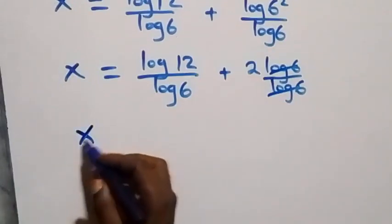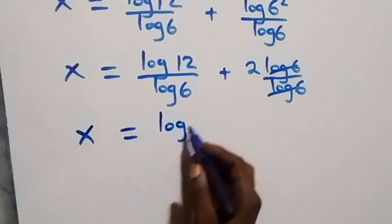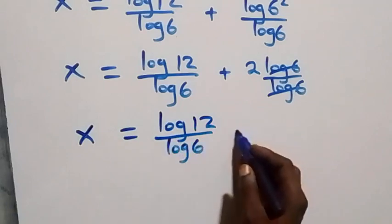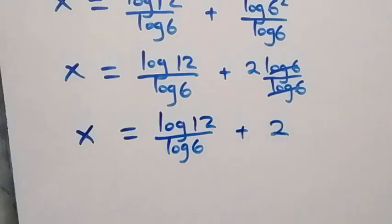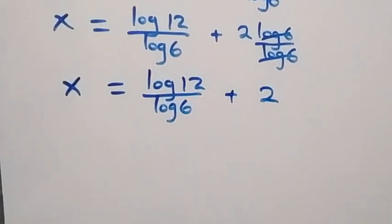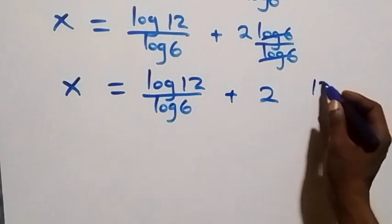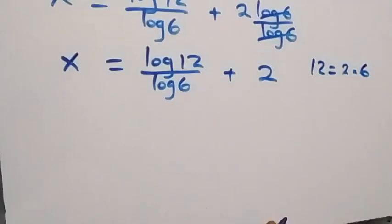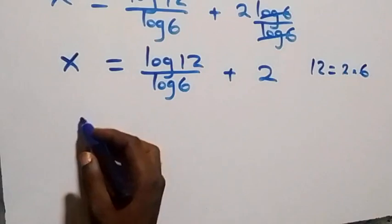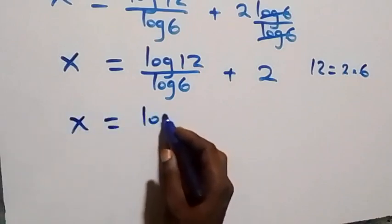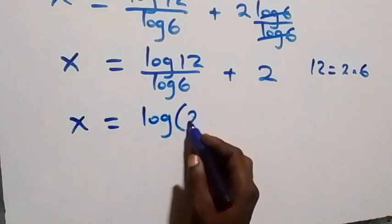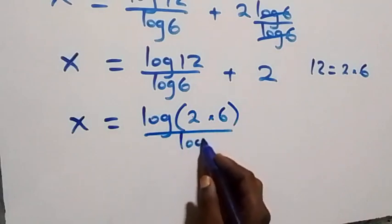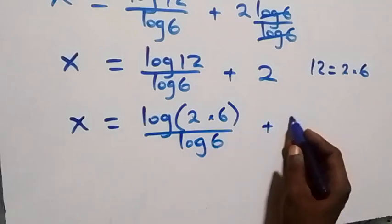So x equals log 12 over log 6, plus 2. Next, let's rewrite 12 as 2 times 6. So x equals log of 2 times 6, over log 6, plus 2.